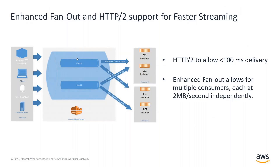Each shard supports one megabyte per second in ingest capacity and two megabytes per second of egress capacity. If you wanted to add even more consumption capacity to a shard, you can use a relatively new feature within Kinesis Data Streams called Enhanced Fanout to support additional consumers. Each of these consumers has a dedicated two megabytes per second pipe available to it per shard. In addition to the added throughput, Enhanced Fanout facilitates lower latency delivery of messages to consumers, because messages are pushed to registered consumers via a long-lived HTTP/2 connection — whereas without Enhanced Fanout, consumers would have to poll the stream for data.